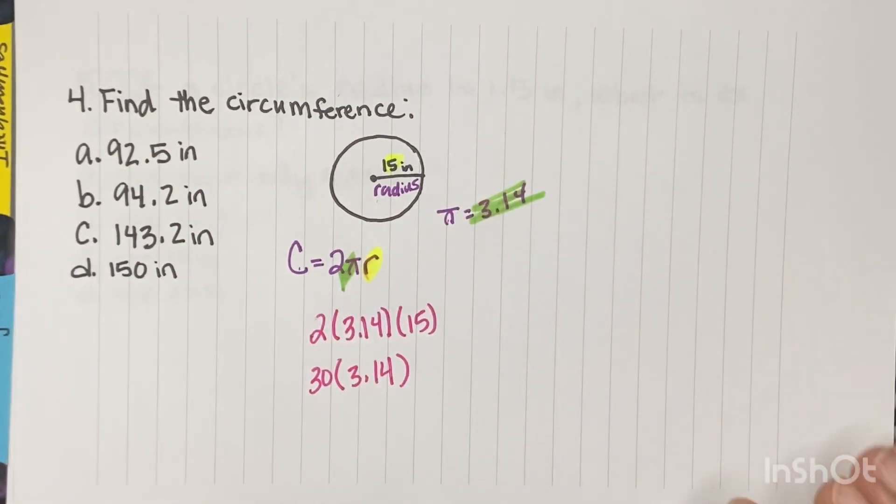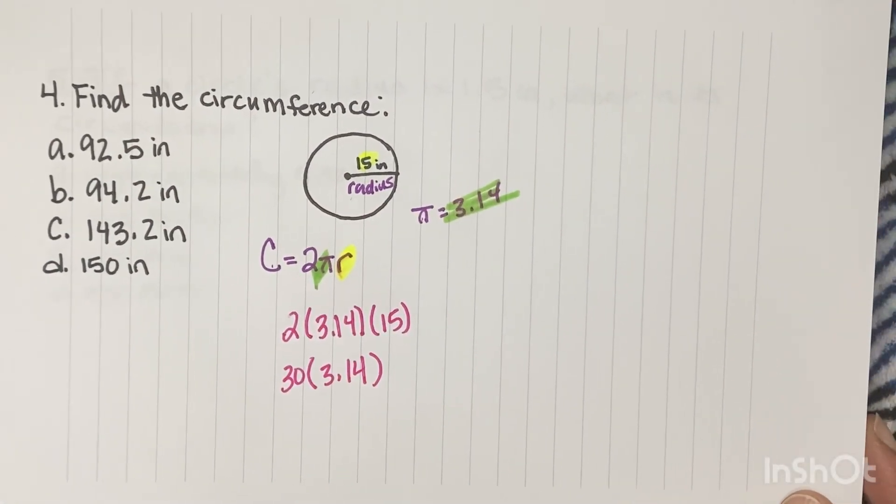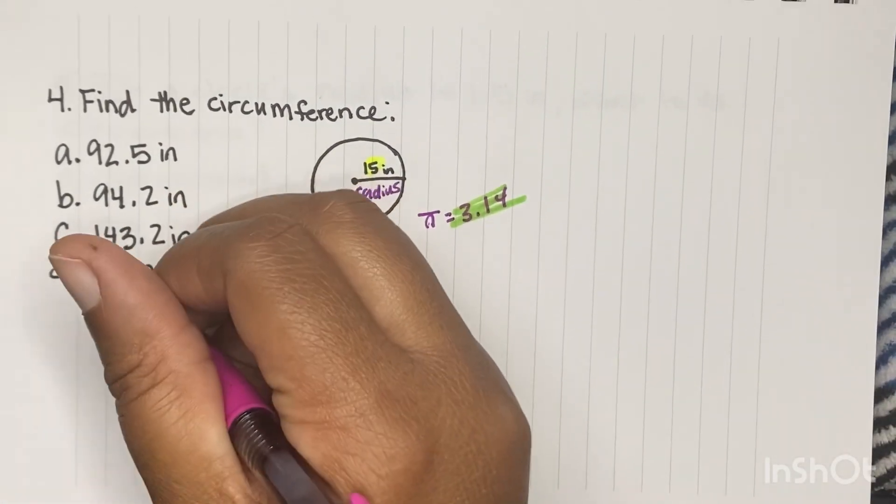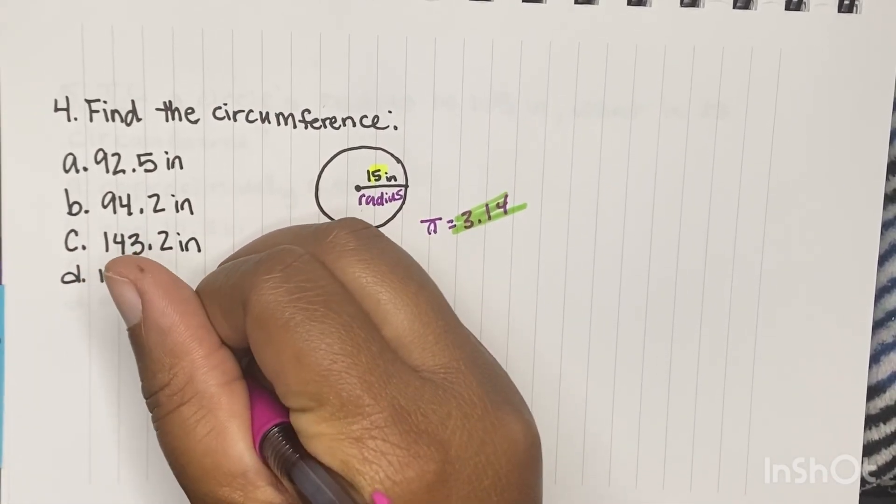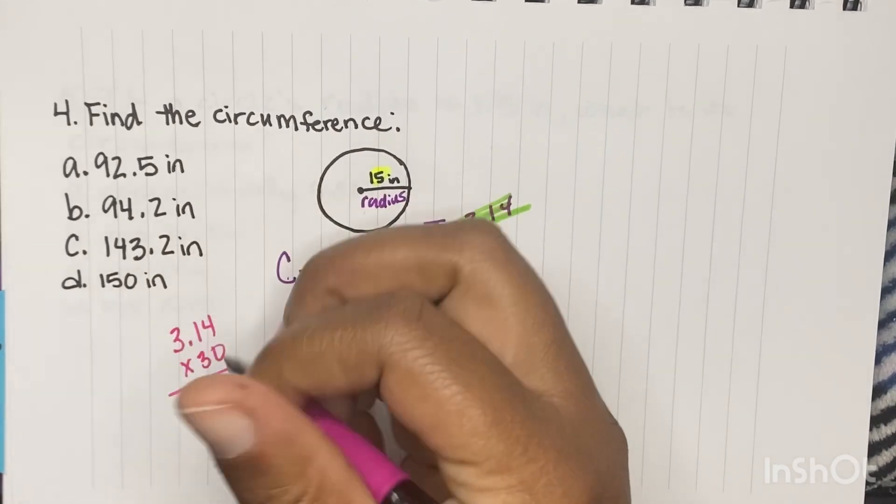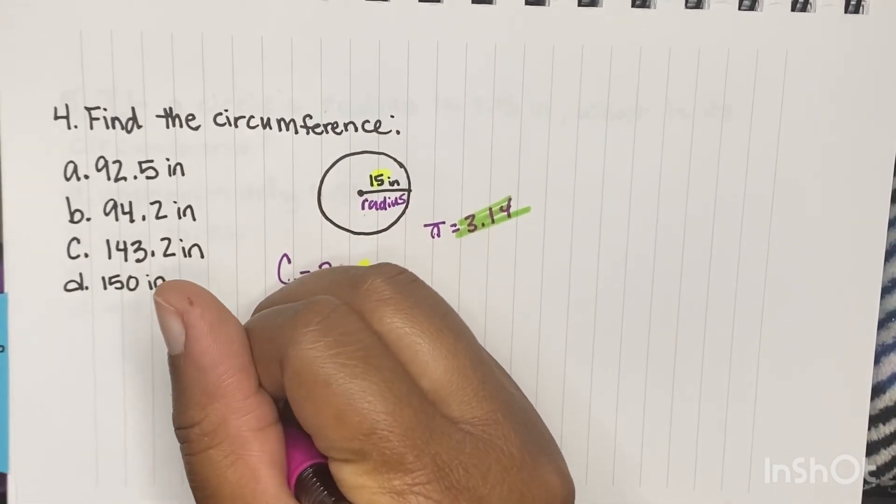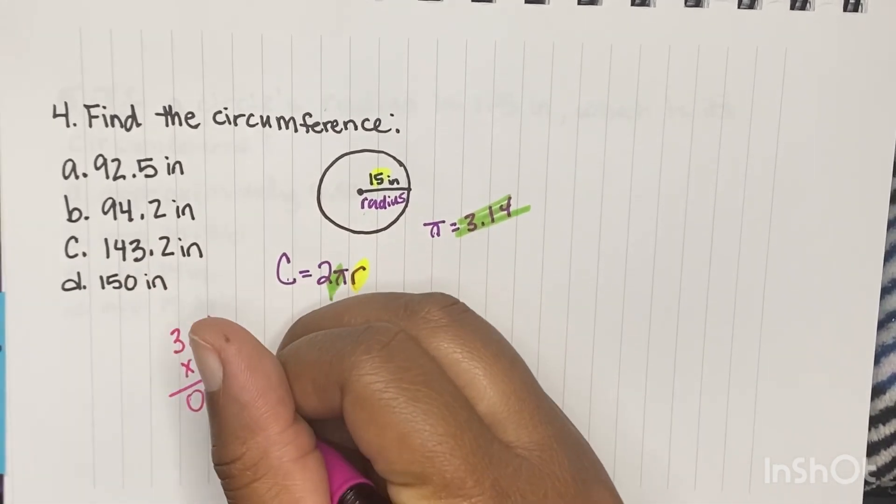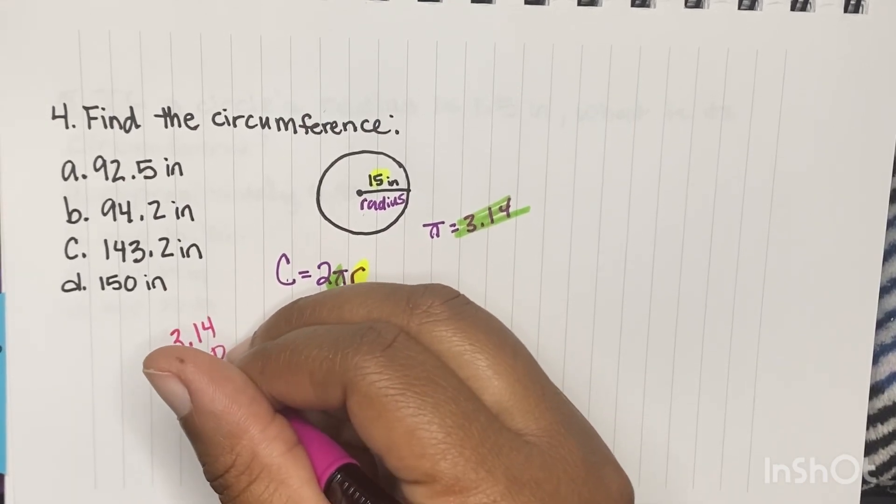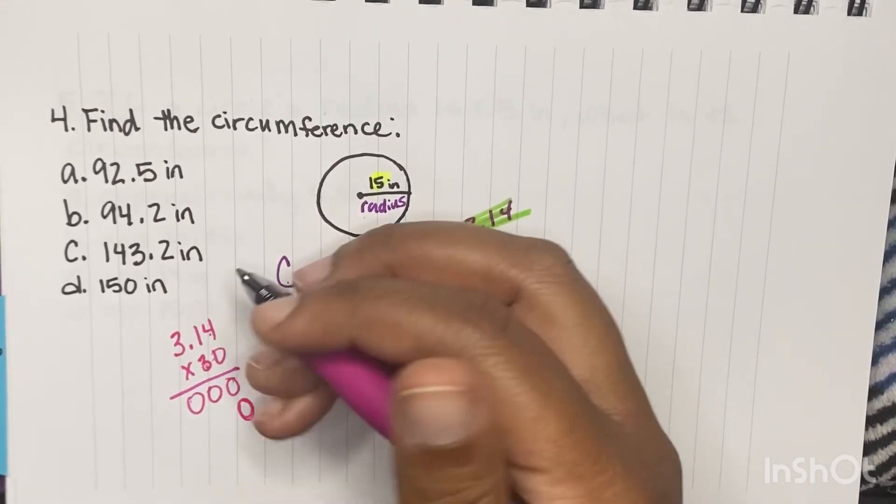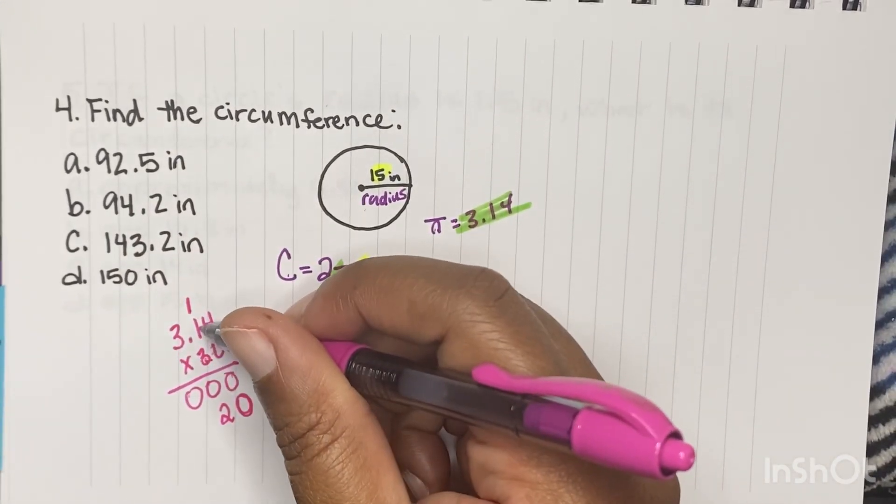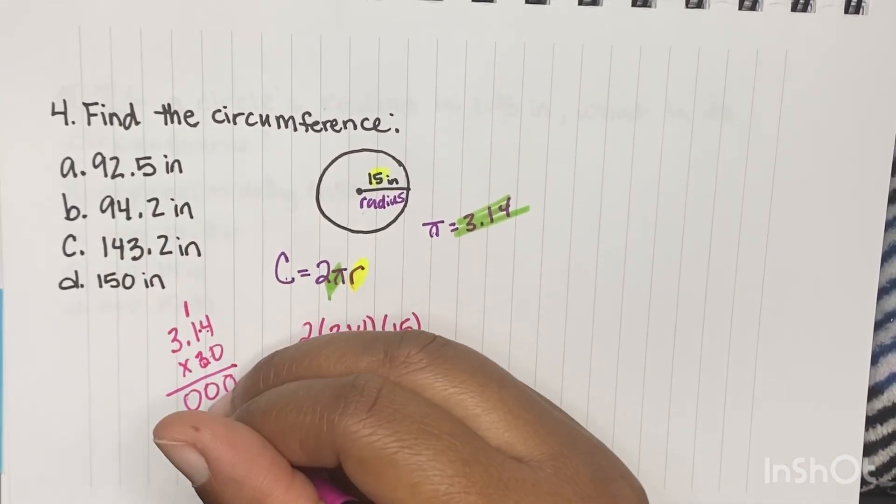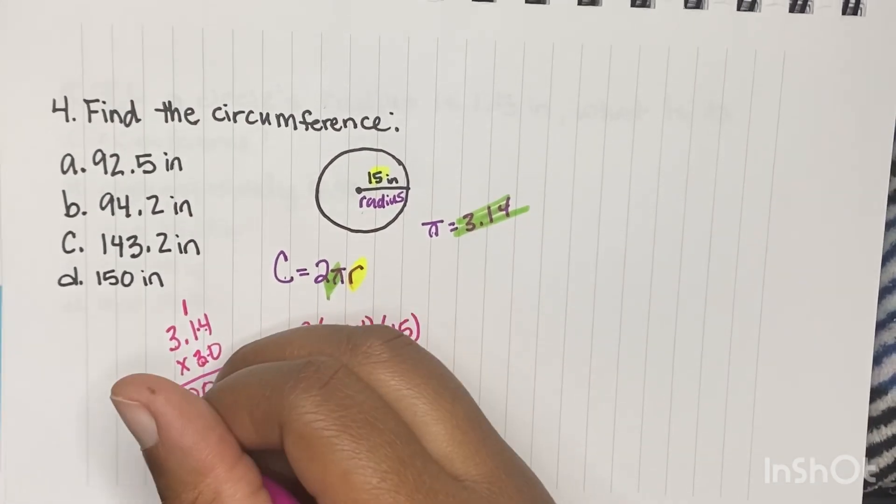So we're going to do 3.14 times 30. So we're going to do 0, 0, 0. Put your placeholder right here because now you're moving to the tens. So 3 times 4 is 12, carry the 1. And 3 times 1 is 3, plus 1 is 4. And then 3 times 3 is 9.